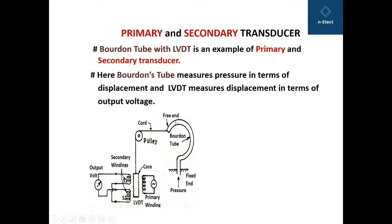What does the LVDT do? The displacement of the Bourdon tube, through the cord, moves the core upward. When this core moves up, the number of flux linkages from the primary to secondary S1 and from the primary to secondary S2 will change. Therefore, the voltages across S1 and S2 will differ, and since S1 and S2 are connected in series opposition, the difference of these two voltages appears as a differential output voltage.